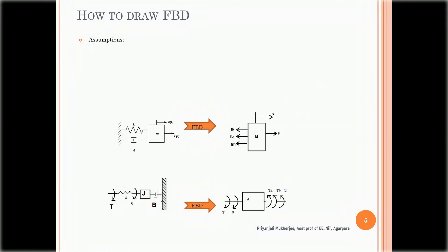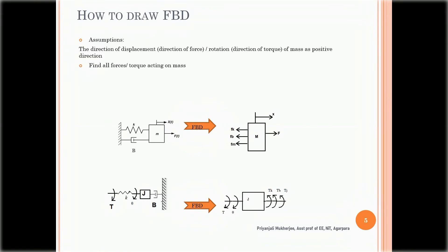Next is the procedure for drawing the free body diagram. To draw the free body diagram, we consider some assumptions. First, we define the direction of displacement — that is, the direction of force for a translational system or the direction of torque for a rotational system — as the positive direction. Then we identify all forces for translational systems or all torques for rotational systems, and apply Newton's law of motion.